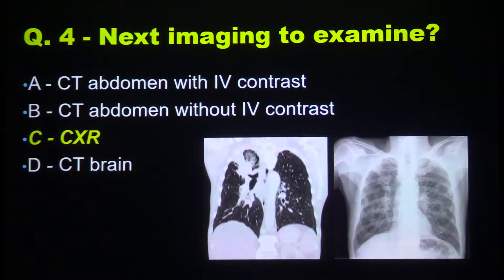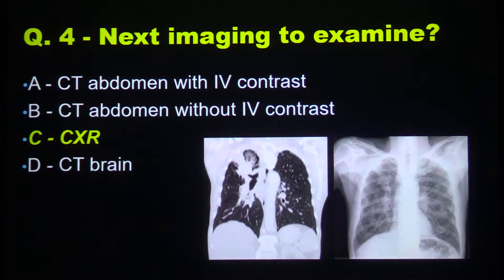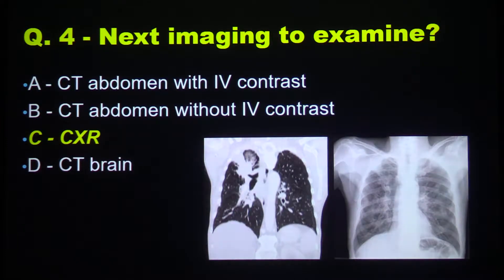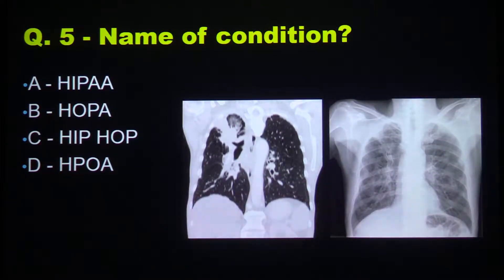Here is a chest X-ray. You can see that he has an opacification on his right upper lobe, which is actually a tumor — you can see it on the CT — a lump. Something which explains what we see.